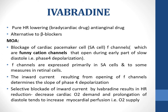The next drug is ivabradine. It is a pure bradycardic, heart-rate-lowering anti-anginal drug used as an alternative to beta blockers. Its mechanism involves blockage of cardiac pacemaker cell F-channels — funny cation channels — that open during the early part of slow diastole (phase 4 depolarization). These F-channels are expressed primarily in sinoatrial cells and to some extent in retinal cells. The selective blockade of this inward current by ivabradine results in heart rate reduction, decreased cardiac oxygen demand, and prolongation of diastole, which increases myocardial perfusion (oxygen supply).